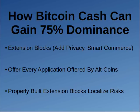The way that Bitcoin Cash can gain 75% market dominance is through extension blocks. What extension blocks are is a way to send Bitcoin Cash to a certain address, and then on the Bitcoin Cash blockchain, the coins at that address can be spent at any time by any user in this extension block that you create. But the extension block itself has rules.